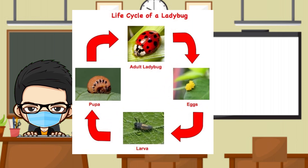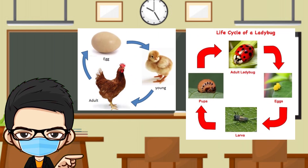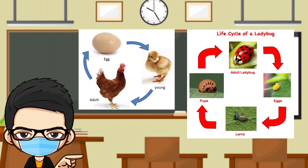Meanwhile, a ladybird beetle has four stages in its life cycle. The larvae and pupa look very different from the adult. Can you spot the similarity between the two life cycles? Yes, both animals lay eggs. However, they have different stages in their life cycle.